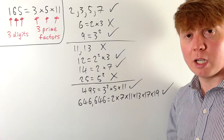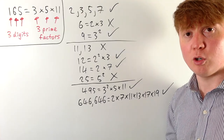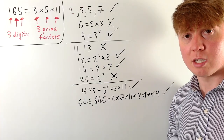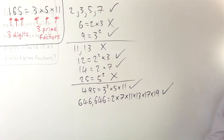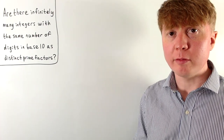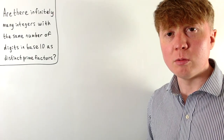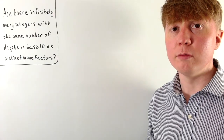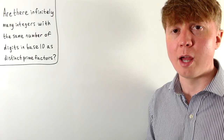We've gone up to six digits, and the question now is: can we keep going forever? Are there infinitely many integers that have the same number of digits in decimal as they have distinct prime factors? If we explore this problem, we find that the limiting factor is the requirement for distinct prime factors. If we try to construct a hundred-digit number with exactly a hundred distinct prime factors, even using the smallest possible primes, we'll need to multiply together some very large primes.